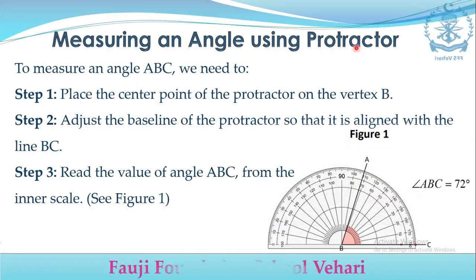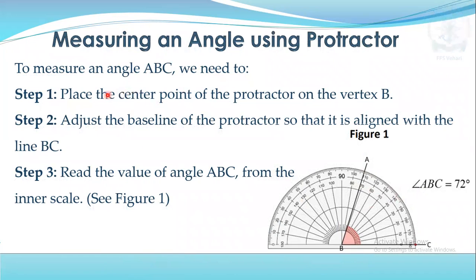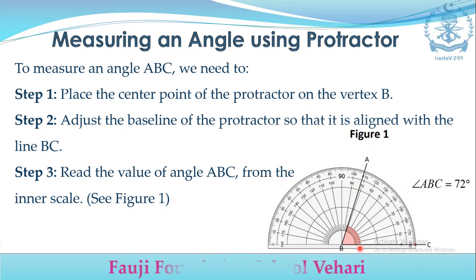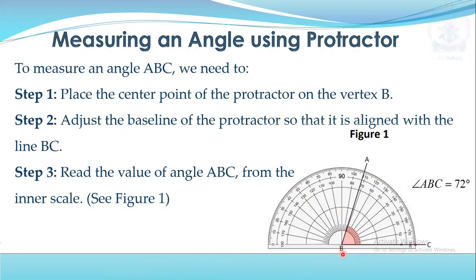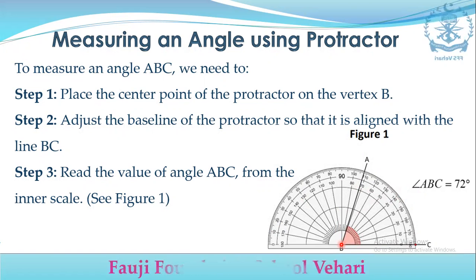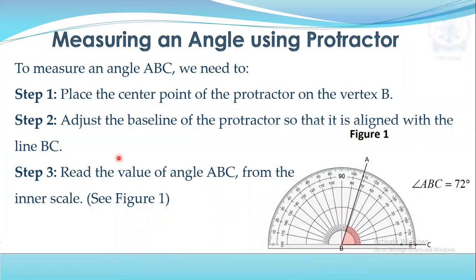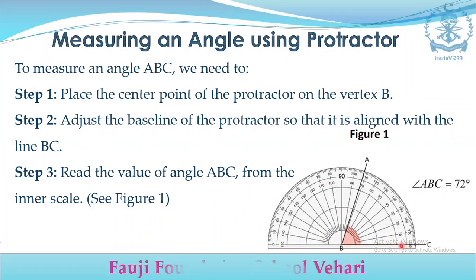How to measure an angle using a protractor. To measure angle ABC: Step 1 — place the center point of the protractor on the vertex B. Step 2 — adjust the base line of the protractor so that it is aligned with line BC. You have to adjust the bottom line so that it is straight on the BC line.